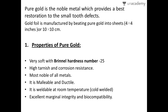Pure gold is a noble metal which provides the best restoration for small tooth defects — in cases of small pit caries, fissure caries, or proximal caries, we usually restore using pure gold. It has many advantages, and gold foil is manufactured by beating pure gold into sheets.